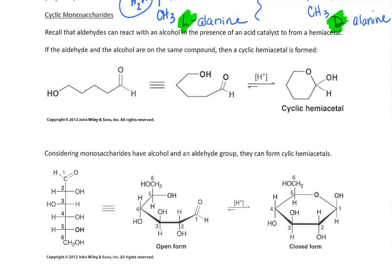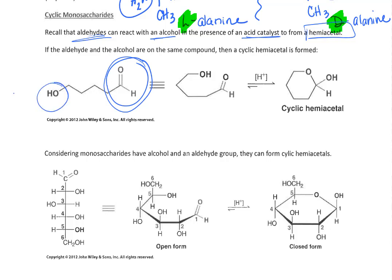When we look at things like this aldehyde here, let's remember that from a prior chapter we could see that aldehydes reacted with alcohols in the presence of an acid catalyst, and what they formed was something called a hemiacetal. So in this structure you have the aldehyde here and you have an alcohol here.